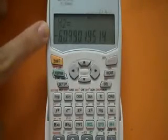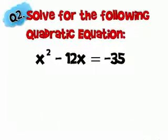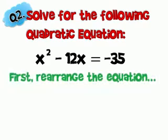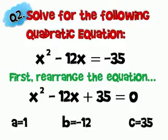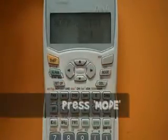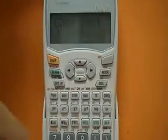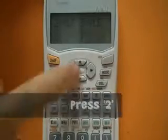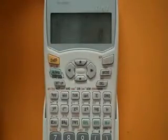In order to round off to 3 significant figures, the answer should be... Okay, let's learn to solve the second question. Now let's recap: press mode, press the down arrow button until you see EQN, press 2 on your calculator. Press down until you see QUAD, press 2 on your calculator.